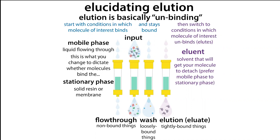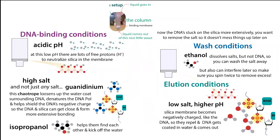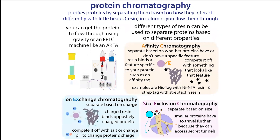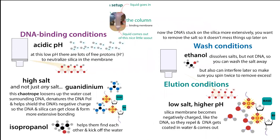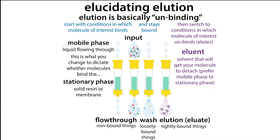Elution is basically just unbinding, whether we're talking about protein chromatography, purifying proteins, or a spin column with a silica membrane used to bind and purify nucleic acids like DNA and RNA. The principle is the same: we get our molecule of interest to bind to some sort of stationary phase — the resin beads in a chromatography column or the silica membrane in a spin column. When your molecule of interest is immobilized, this allows you to wash off the stuff you don't want. Then you need to get your molecule to actually release from that stationary phase — this is the part we call the elution.